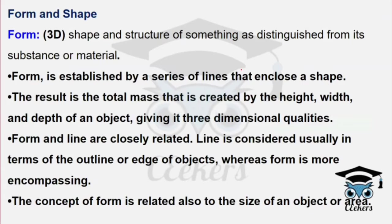Form and shape are key elements in architecture. These are among the main elements, along with lines of structure.